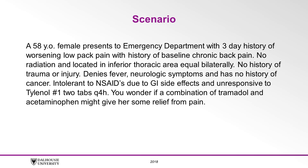Let's construct our PICO from this patient scenario. A 58-year-old female presents to the emergency department with a three-day history of worsening low back pain with a history of baseline chronic back pain. The pain doesn't radiate and is located in the inferior thoracic area equally bilaterally. There is no history of trauma or injury. The patient denies fever, neurologic symptoms, and has no history of cancer. She is intolerant to non-steroidal anti-inflammatories due to GI side effects and is unresponsive to Tylenol-1 two tabs every four hours.